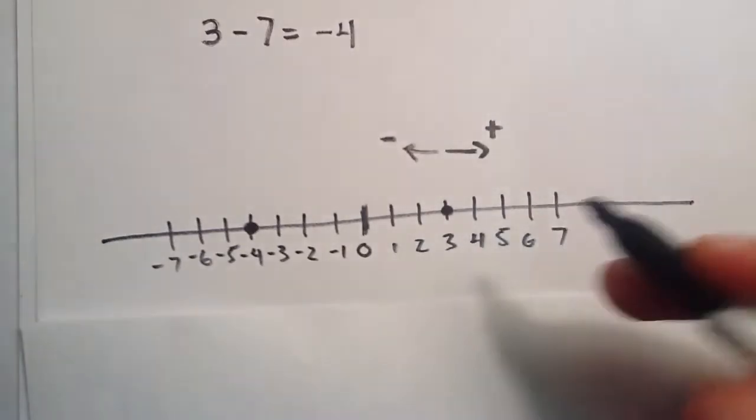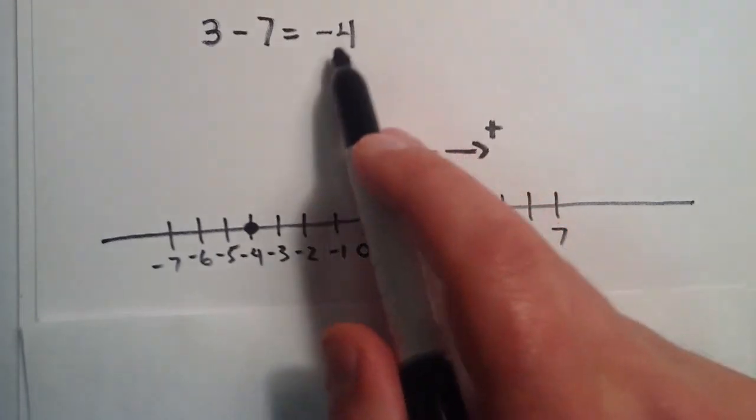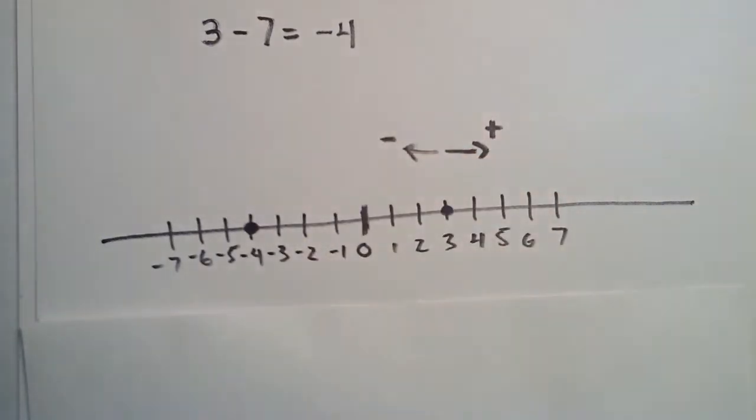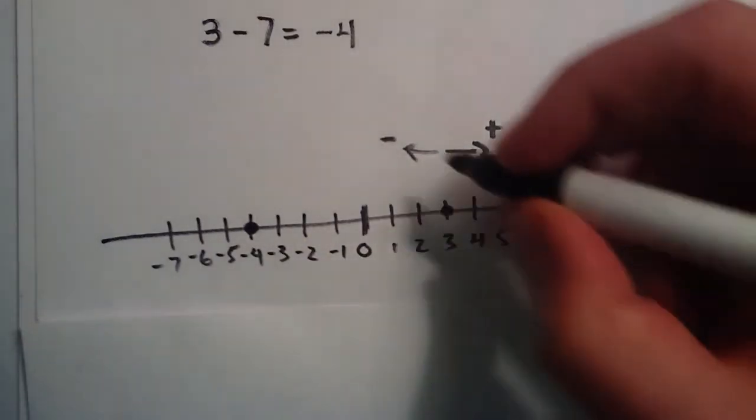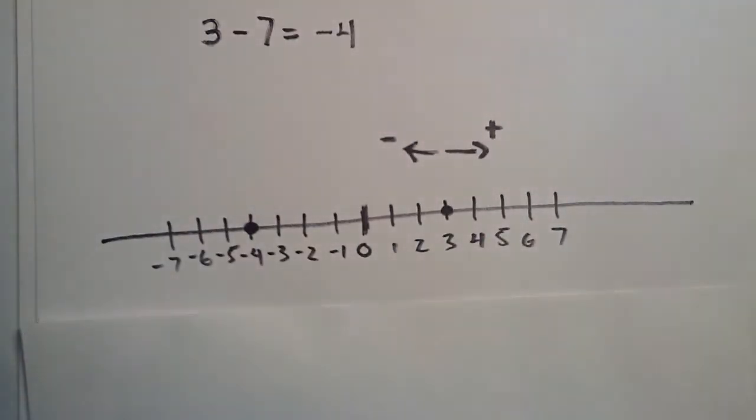So in our situation, this basically means that this is $4 we don't have that we still owe the bank. So that's what negative 4 means in this situation. That's a pretty good way to think about it at first, to think about negative numbers in terms of bank statements when you start getting used to using negative numbers.